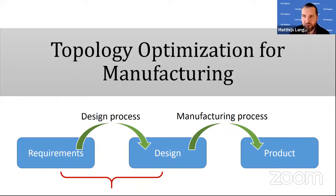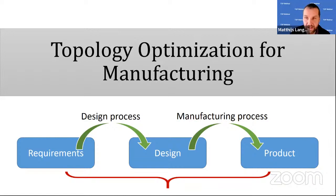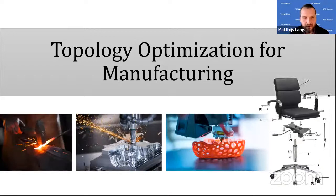Design for manufacturing is a broader concept than topology optimization — it is a general approach to the design process. We have to look at the entire chain: what is possible in the specific manufacturing process and include those restrictions already in the conceptual phase. This has been recognized since the early days of topology optimization, for instance getting rid of checkerboards which were not manufacturable.